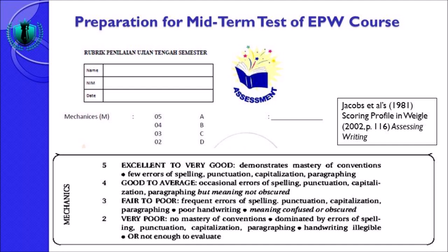The last one is mechanics. Nilai tertinggi adalah 5, kemudian 4, 3, 2 — A, B, C, D. Untuk mendapatkan nilai 5 yaitu excellent to very good, indikatornya adalah demonstrate mastery of conventions — nampak terefleksi penguasaan anda terhadap convention tentang mechanics. Pelajari lagi apa itu huruf kapital, huruf yang harus di-italic, koma, tanda seru, tanda tanya, hyphen, colon, semi colon — semuanya berada pada unsur mechanics.